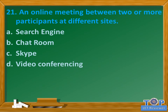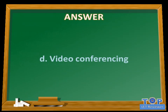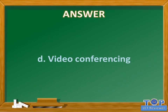Question number twenty-one: An online meeting between two or more participants at different sites. A. Search engine. B. Chat room. C. Skype. D. Video conferencing. Answer: D. Video conferencing.